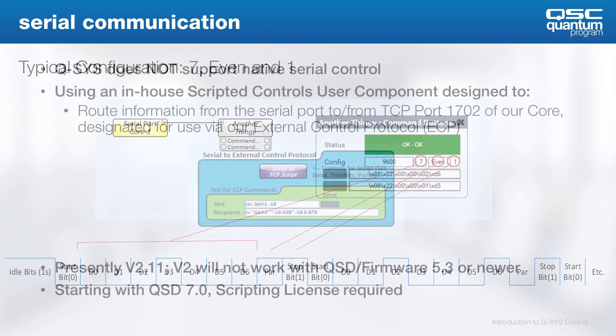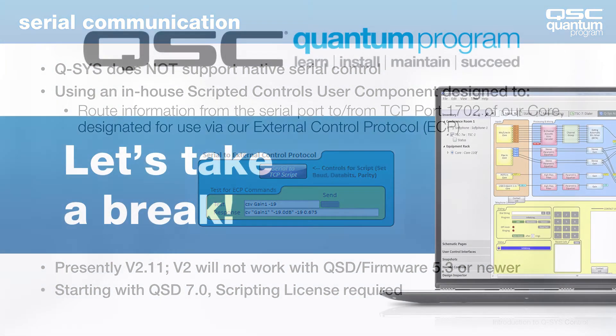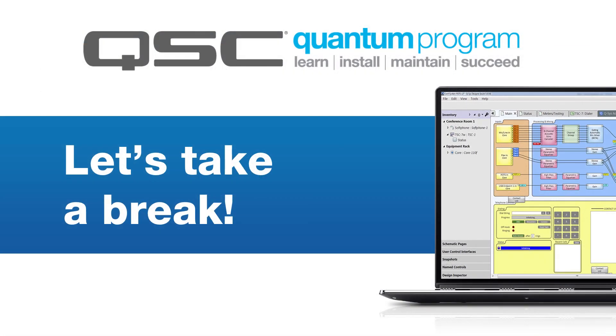Since QSYS doesn't support serial control from third-party devices natively, we need to add this functionality to our QSYS design. To do this, we need to add a serial-to-TCP script to the schematic, then connect that script to the QSYS device's serial connection. Since this control utilizes a script, keep in mind that a scripting license will be required. That seems like a good place to stop. When we get back, we'll open up QSYS Designer Software and show you how to configure serial communication GPIO in QSYS. See you then!